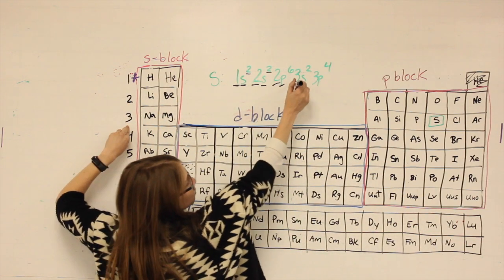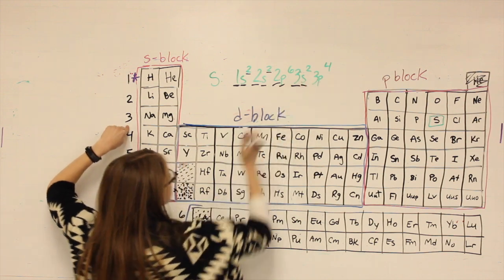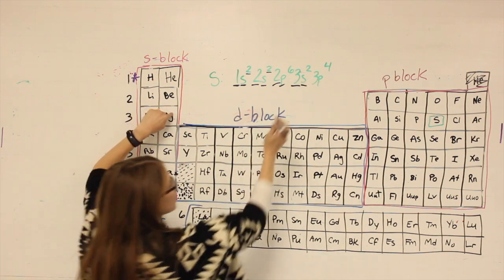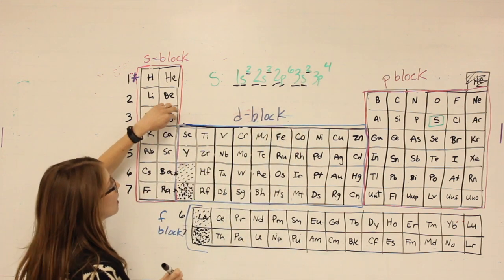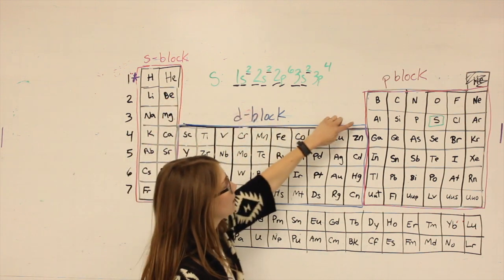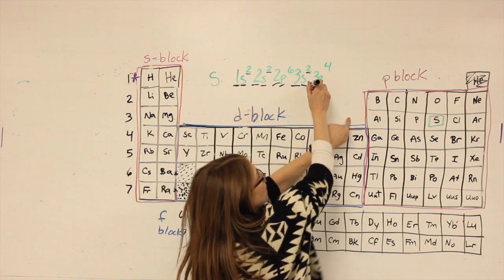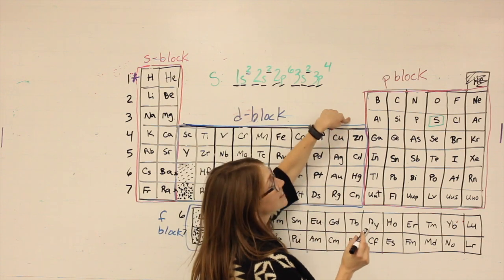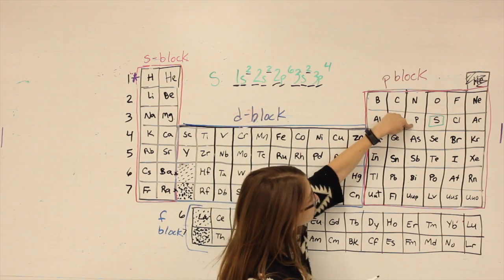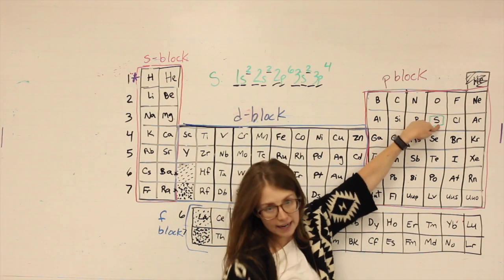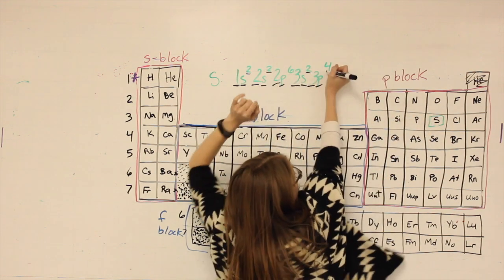Here. Third row, S-block, one, two spaces. Not yet at sulfur, so I keep going. That's a new area. Third row, P-block. To get to sulfur, one, two, three, four. We have to actually land on that space. Four spaces.